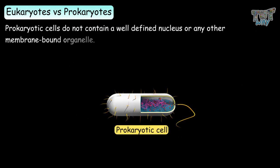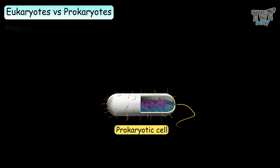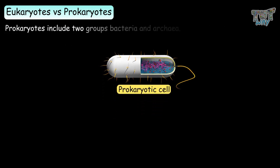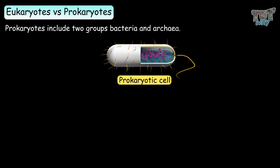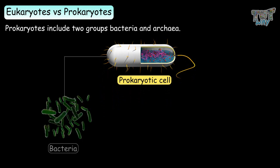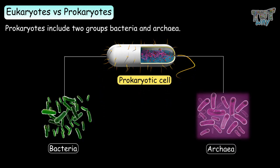Prokaryotic cells do not contain a well-defined nucleus or any other membrane-bound organelle. Prokaryotes include two groups: bacteria and archaea.